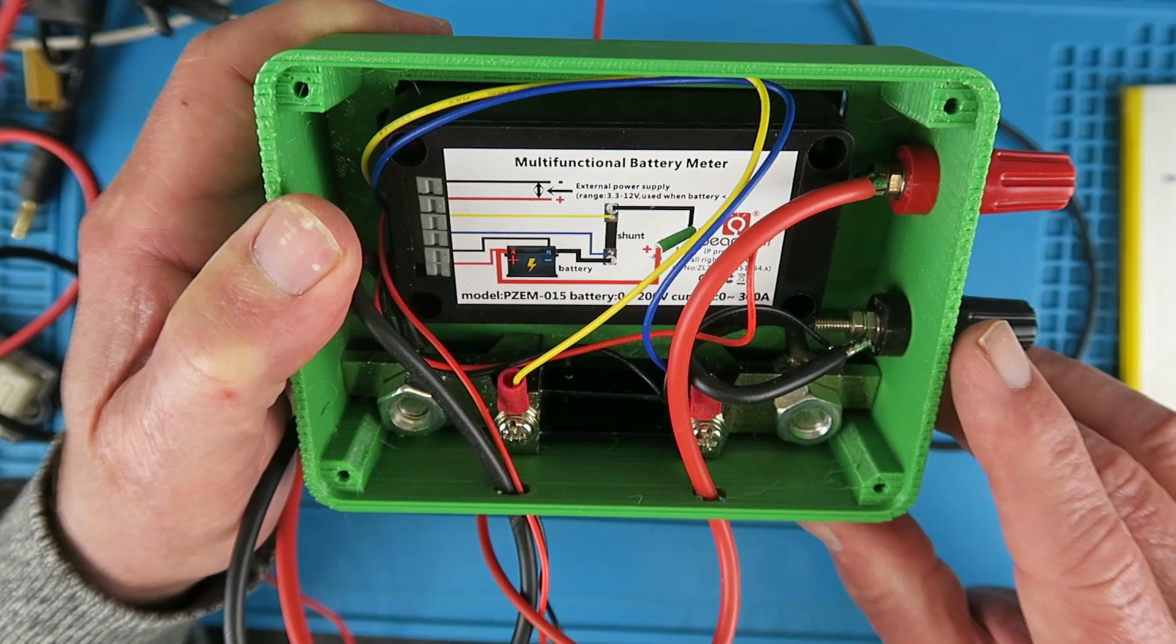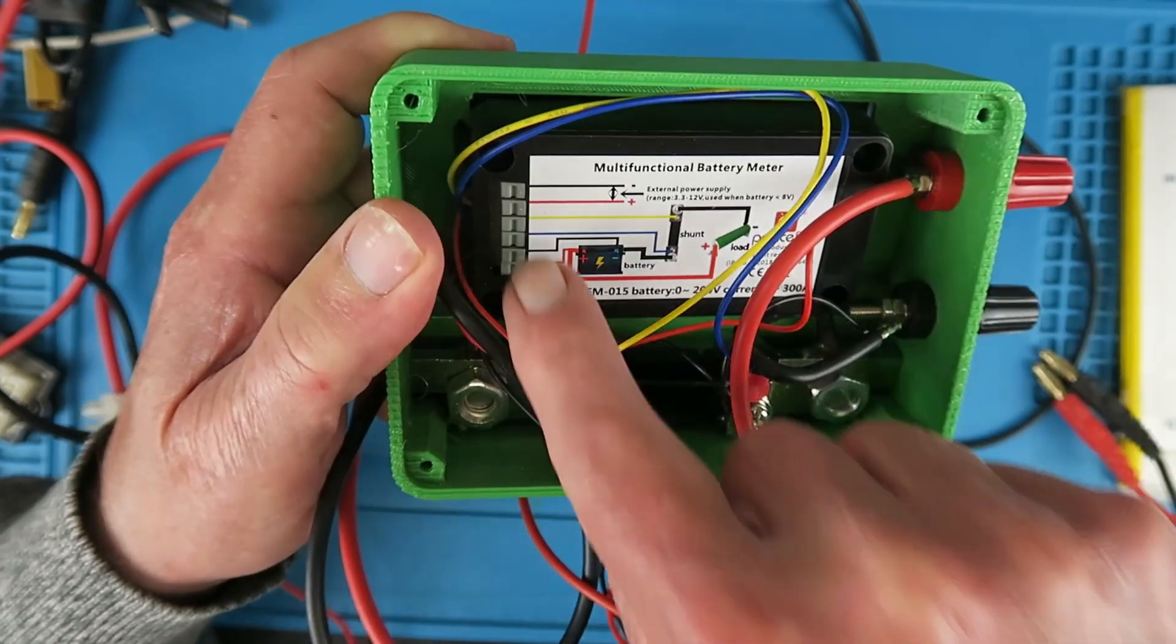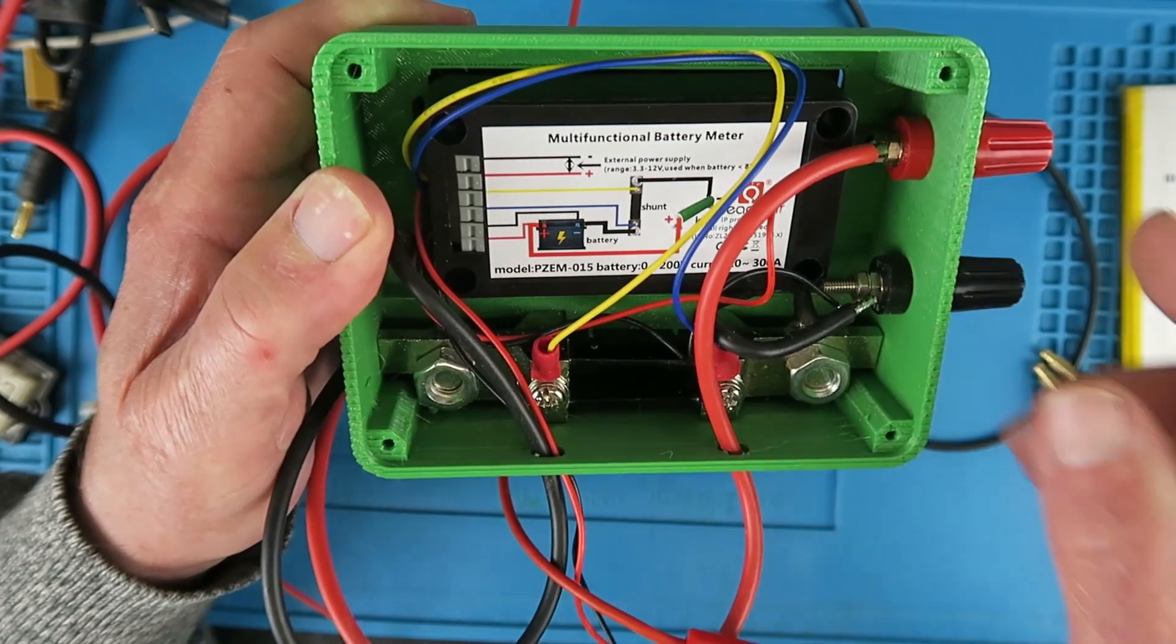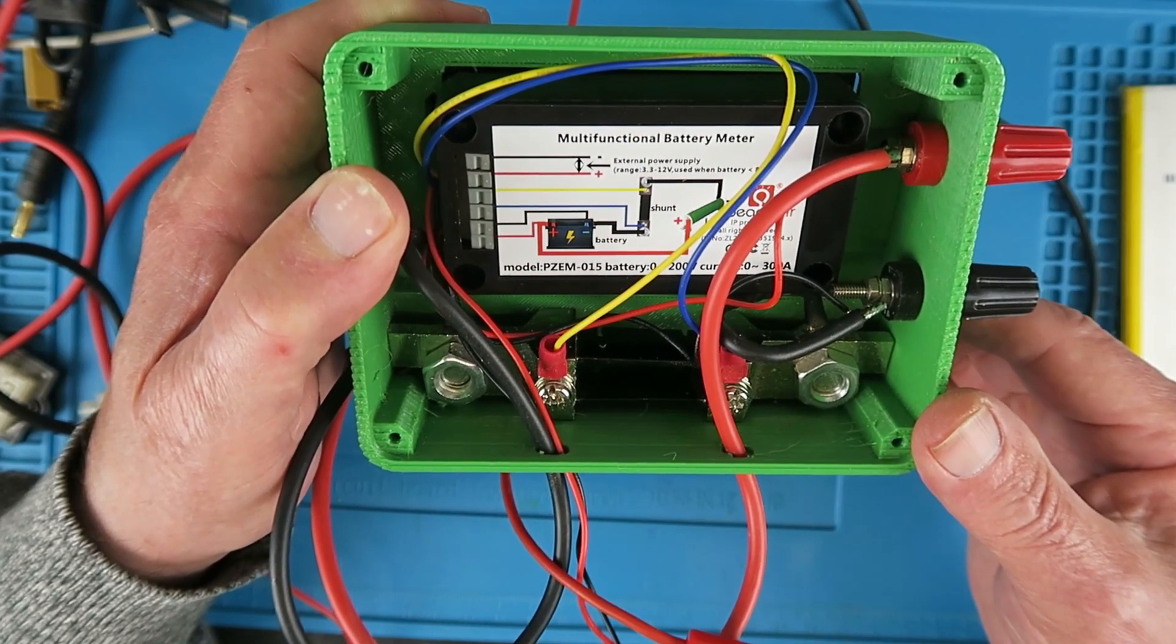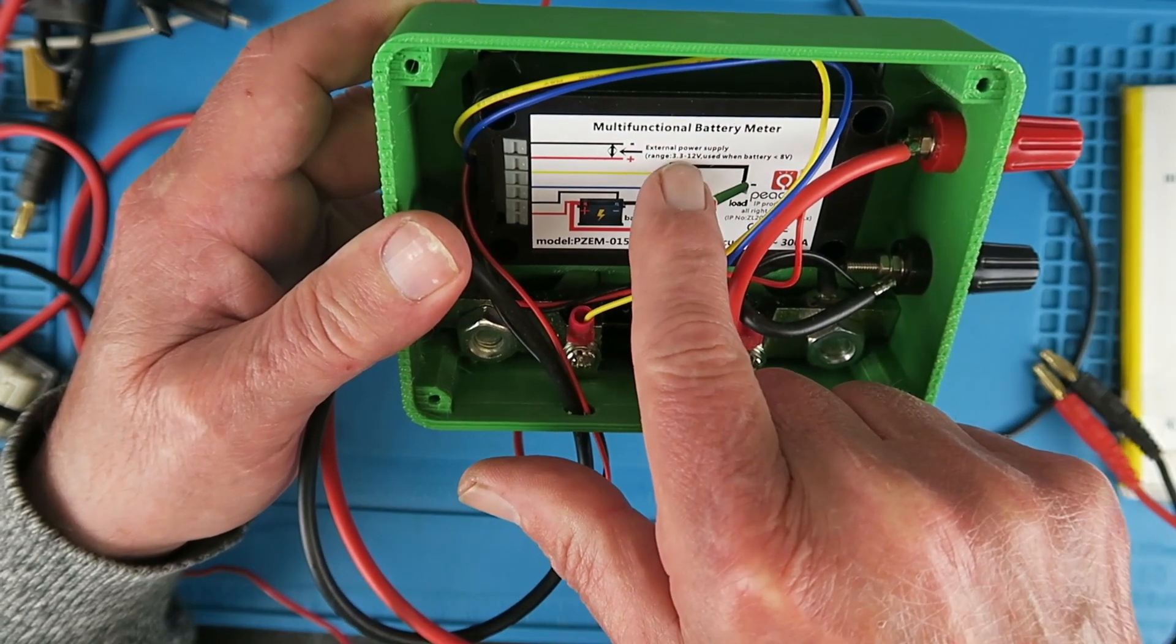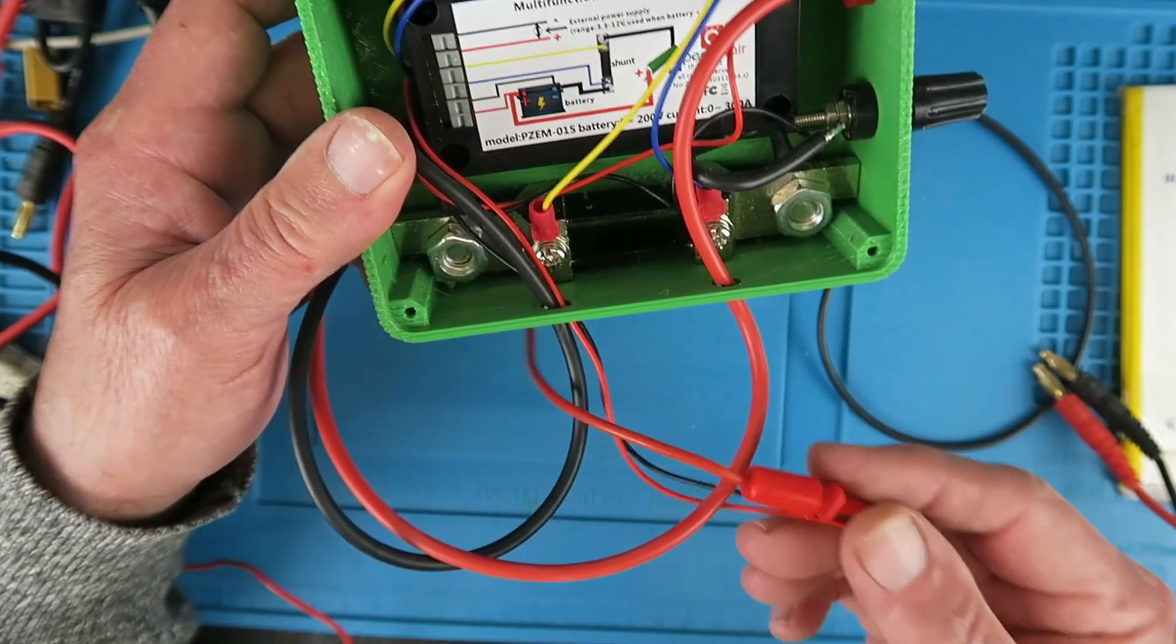The wiring is quite straightforward and described well on there. A little terminal block and the cables apart from the thick cables here are all supplied with the unit. If your battery like the first one that I showed you is less than eight volts then you power the unit from an external supply.